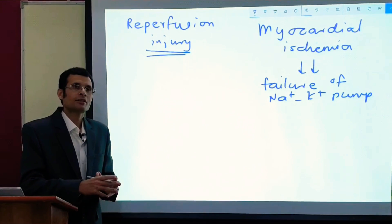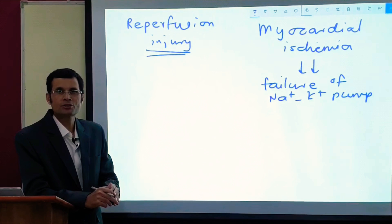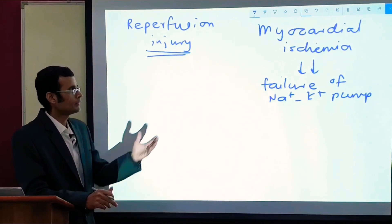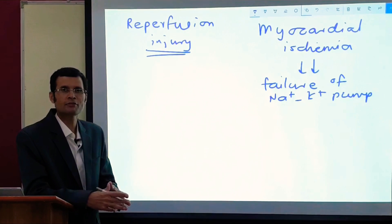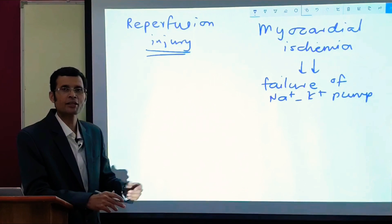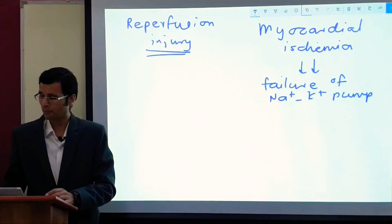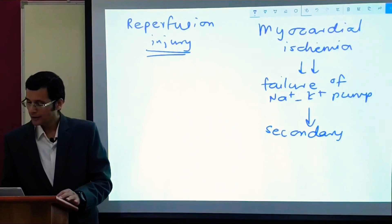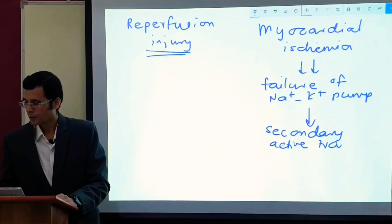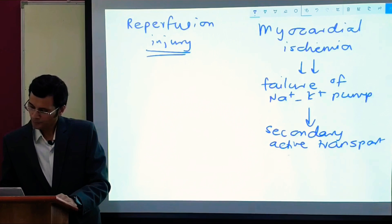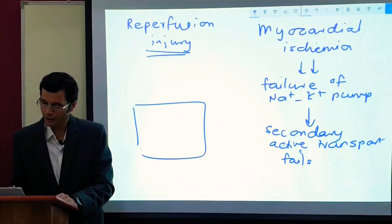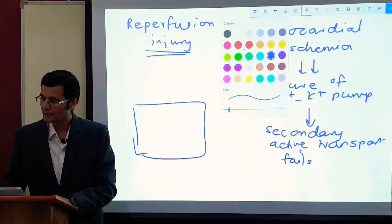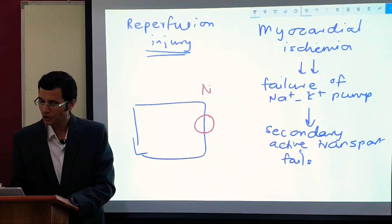Now we can recall that all the secondary active transports are critically dependent on the activity of the sodium-potassium pump. This is a primary active transport absolutely necessary for the functioning of the carriers in secondary active transport. So if the sodium-potassium pump fails, that means the result would be failure of the secondary active transports. Now in this case, myocardium has the secondary active transporter by the name NCX, sodium-calcium exchanger.